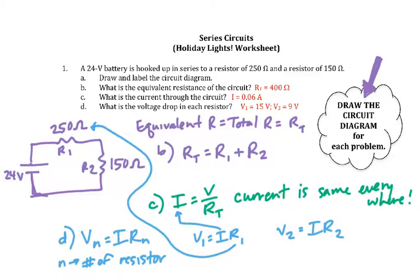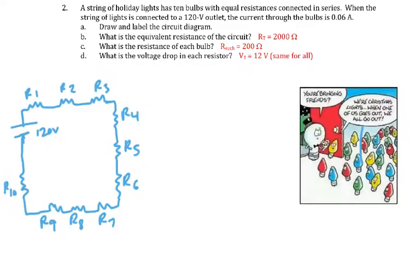Number two is a bit more of a puzzle. I've gone ahead and drawn it out for you. You've got 10 resistors in series, meaning they're all in one long line. They're attached to a 120-volt outlet, so I'm showing that as my voltage source right here.